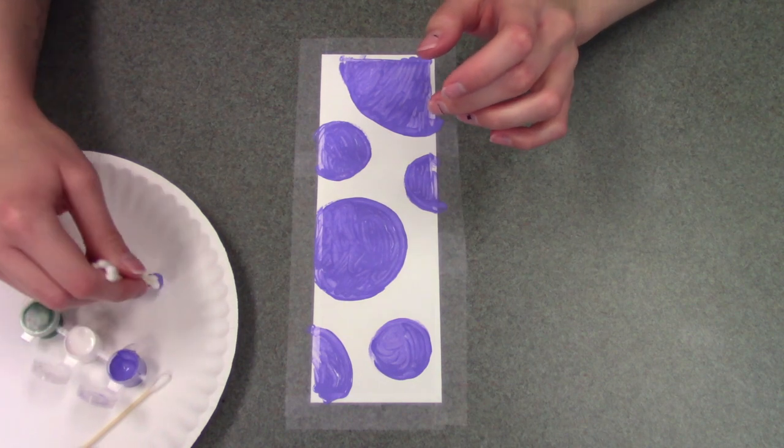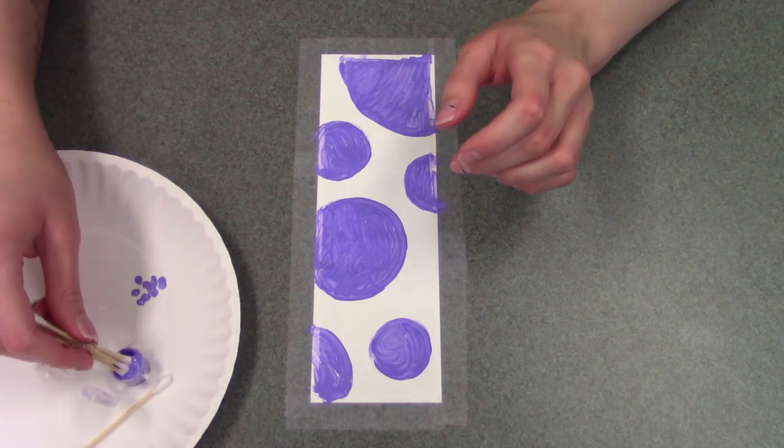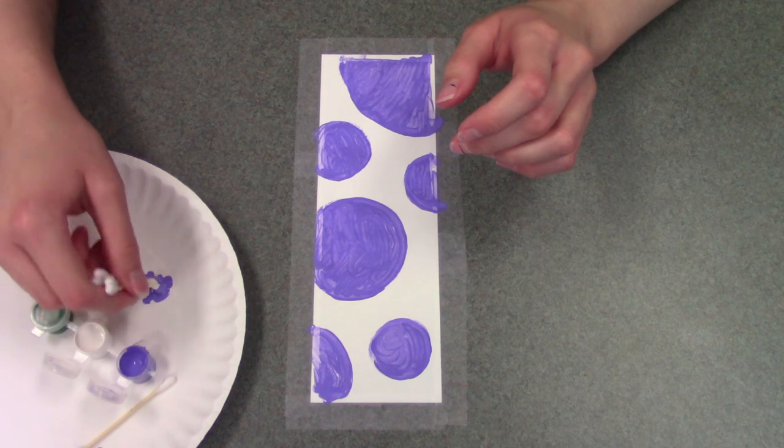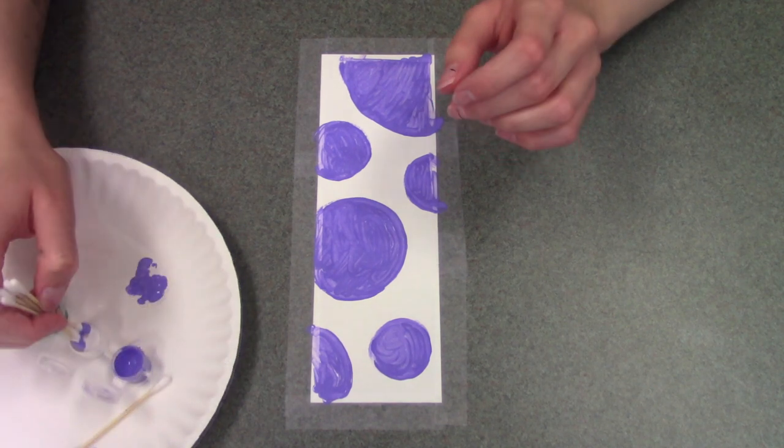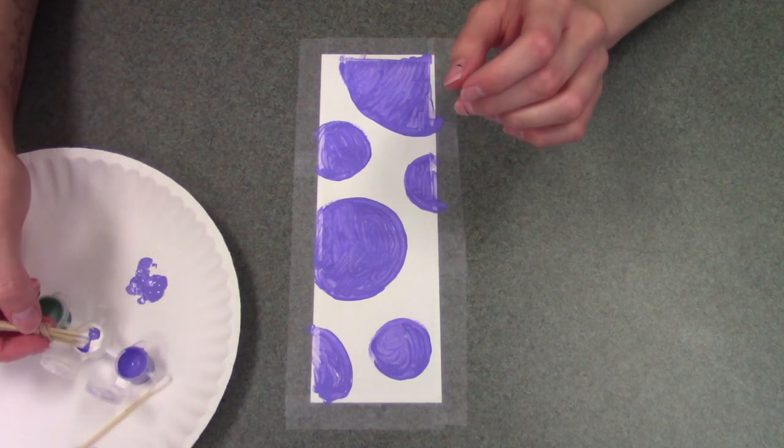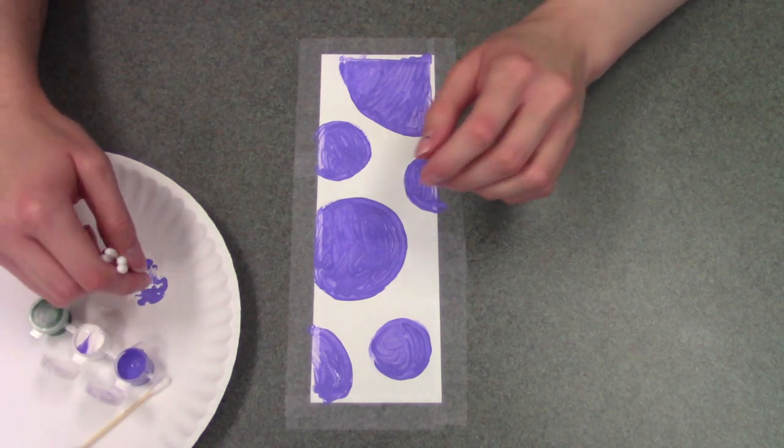So first you're gonna dab it into the purple, put some on the side of the plate. You don't have to use a plate but I want to kind of mix the colors perfectly. And then you're gonna dab it into the white and then mix those two together to make a lighter shade of purple.